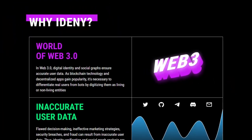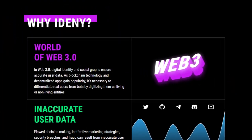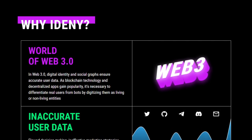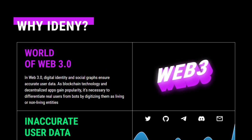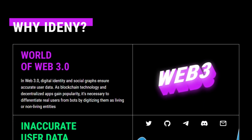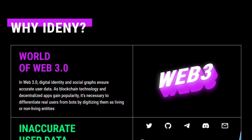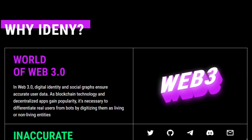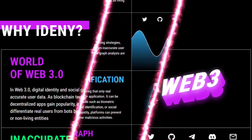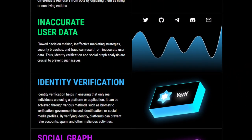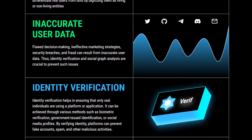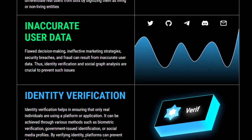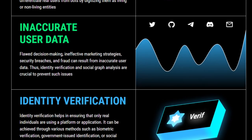It's the world of Web 3.0. In Web 3.0, digital identity and social graphs ensure accurate user data. As blockchain technology and decentralized apps gain popularity, it's a necessity to differentiate real users from bots by digitizing them as living or non-living entities. There is also inaccurate user data — flawed decision making, ineffective marketing strategies, security breaches, and fraud can result from inaccurate user data.